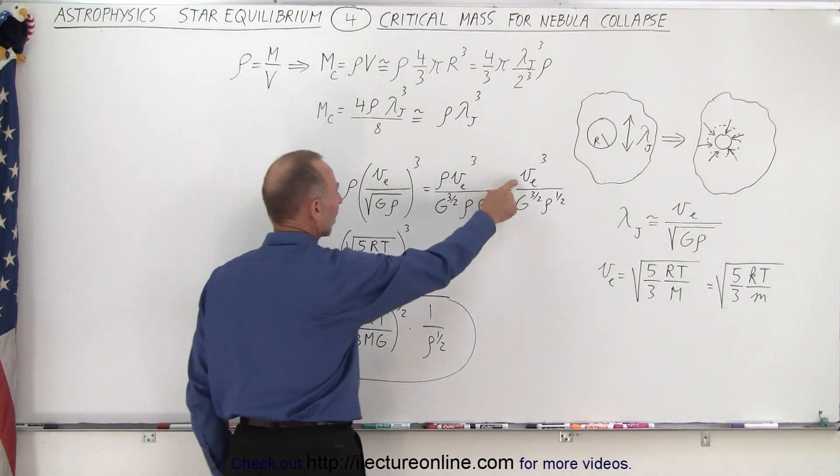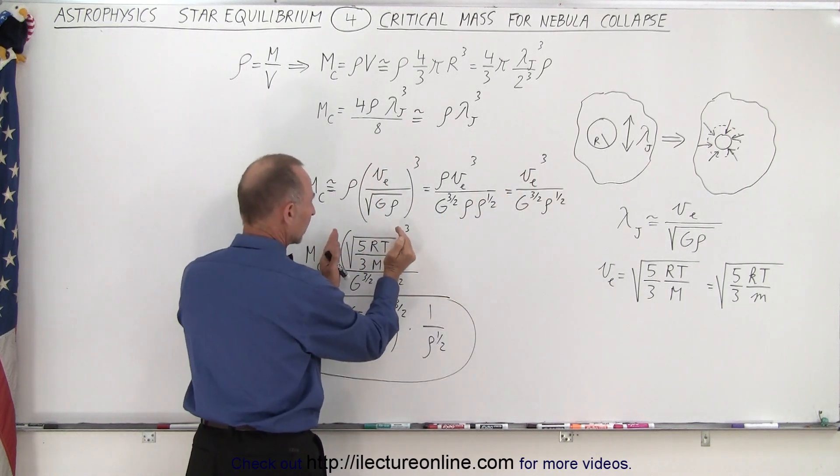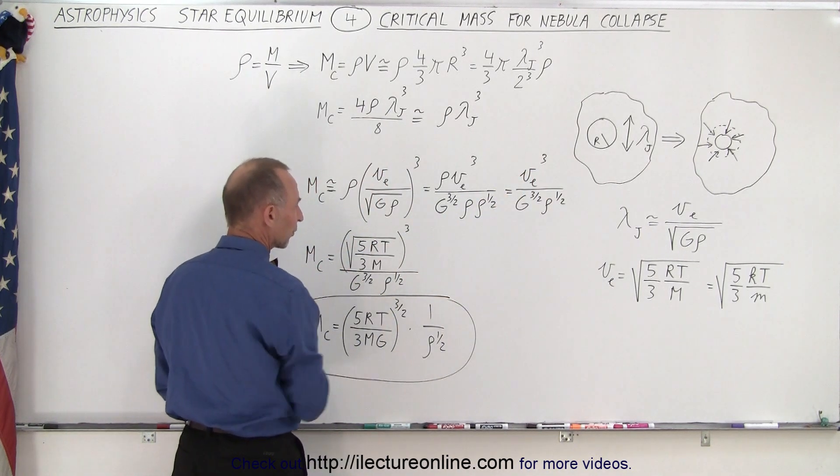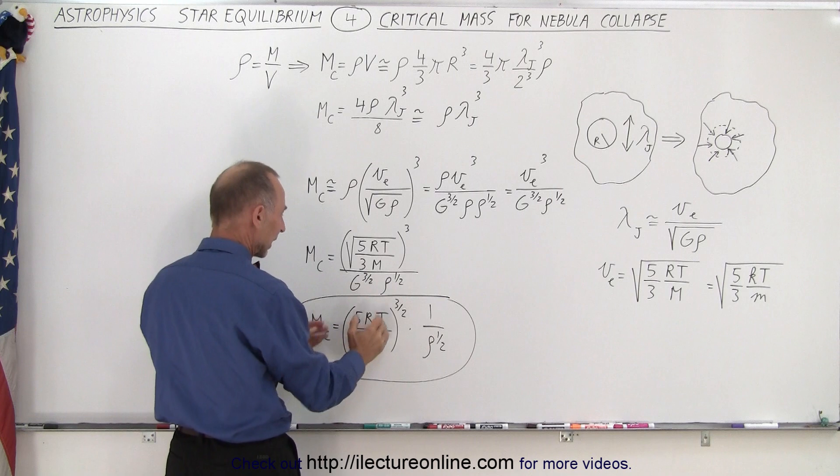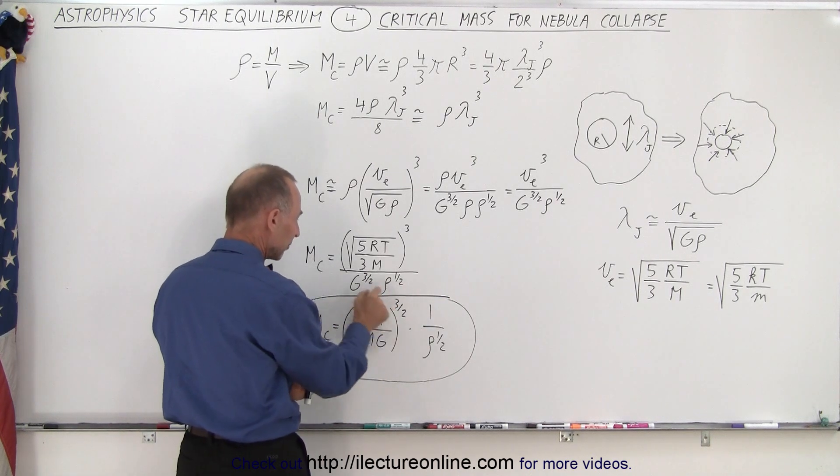So now we're going to replace the escape velocity, which is cubed, by the quantity the square root of 5RT over 3M. Since it's cubed, we now get this quantity to the 3/2 power.